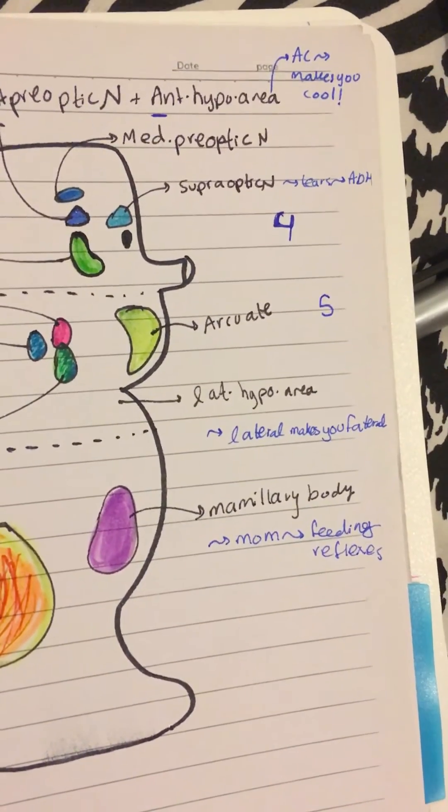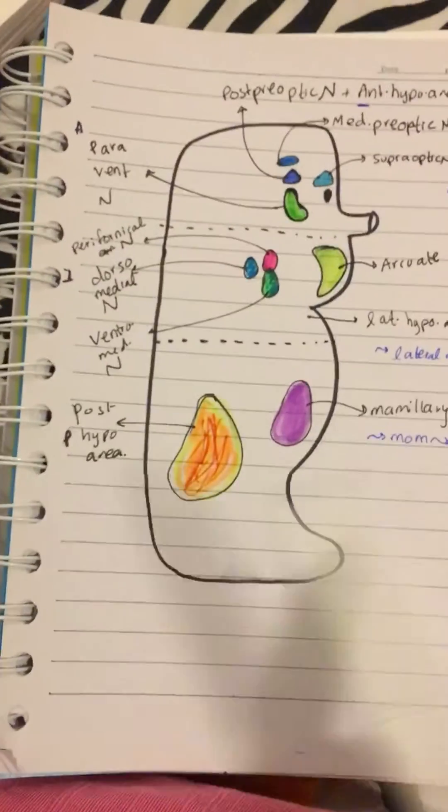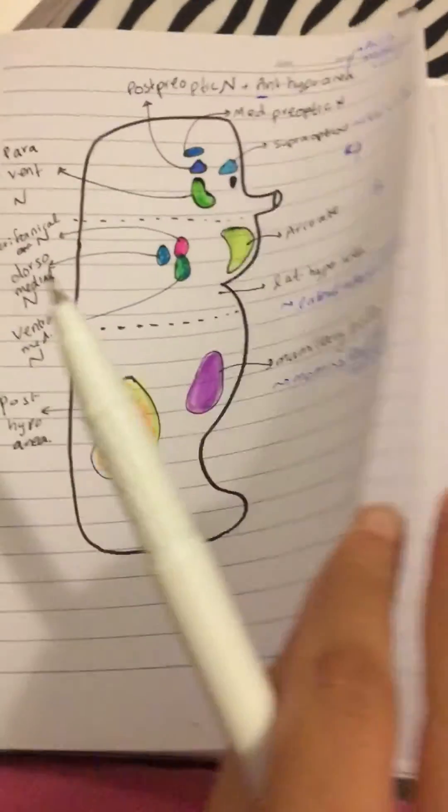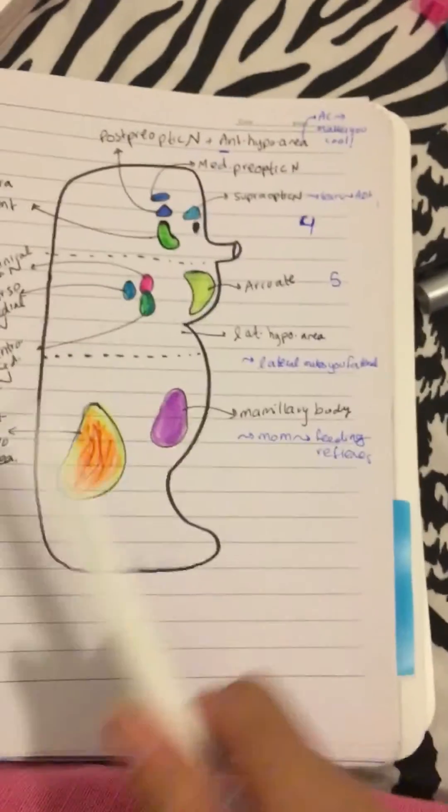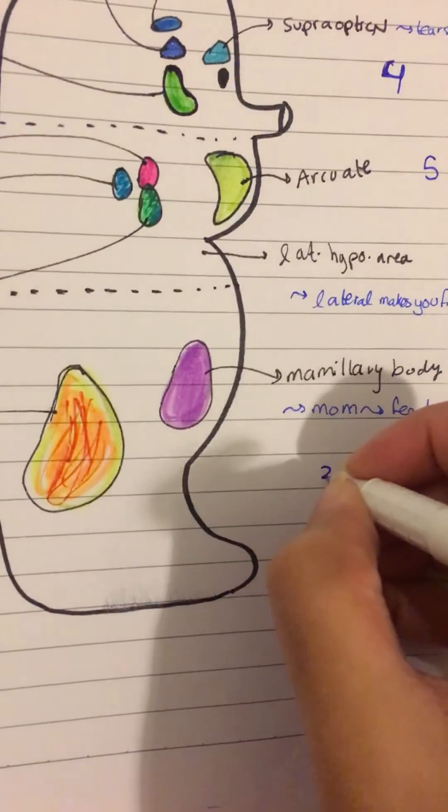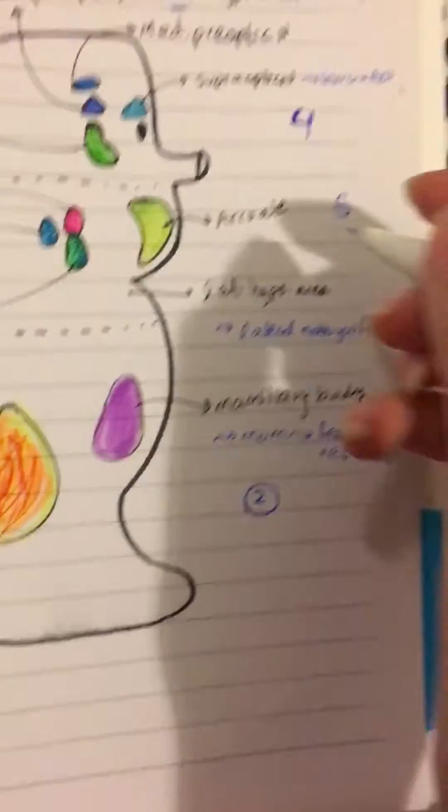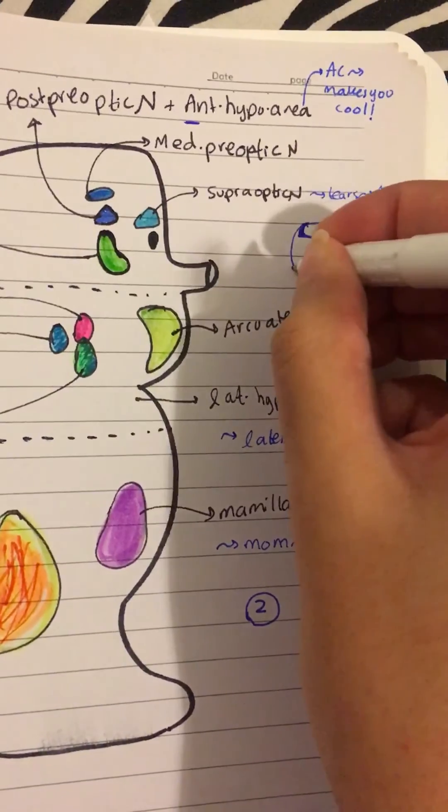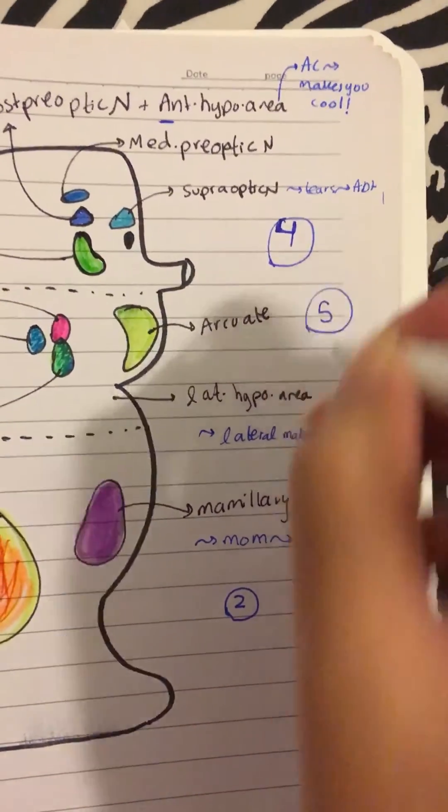And that is it. Basically, I'm going to write the other things behind here, hopefully. So yes, four, five, oops, we only have two things here. So, four, five, and two. And that is the nuclei of the hypothalamus.